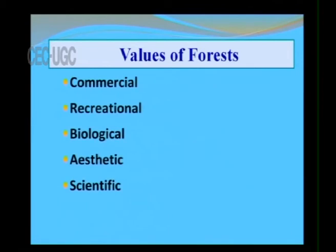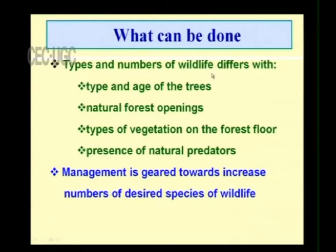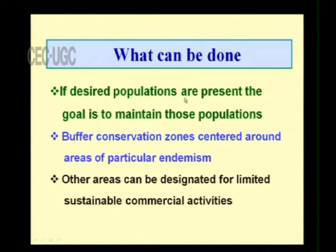The values of the forest ecosystem include commercial, recreational, biological, aesthetic, scientific, and social value. The type and number of wildlife differs with the type and age of trees, natural forest openings, types of vegetation on the forest floor, and the presence of natural predators. Management is geared towards increasing the number of desired species, and if desired populations are present, the goal is to maintain them. Buffer conservation zones around areas of particular significance can be designated for limited sustainable commercial activities.